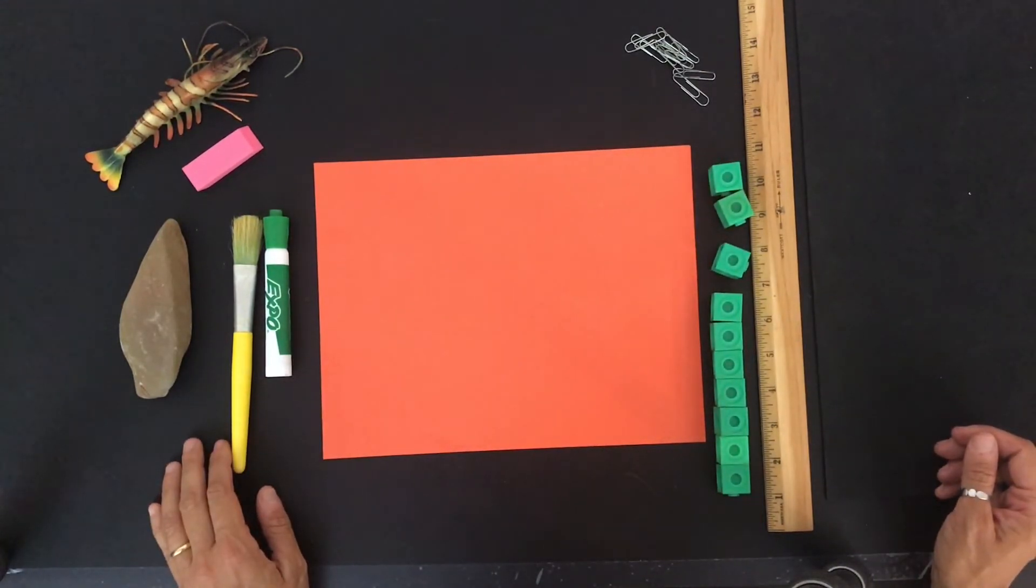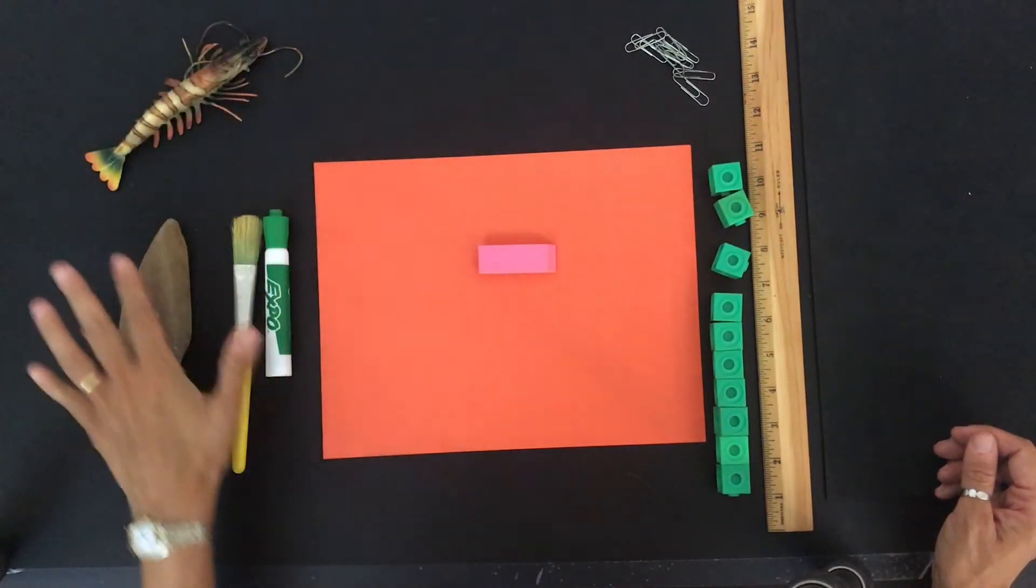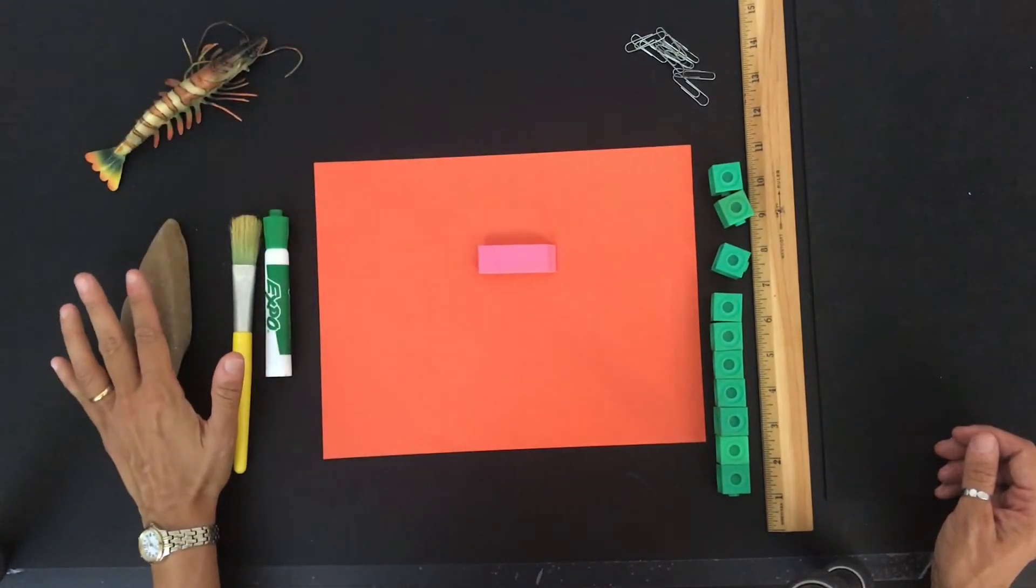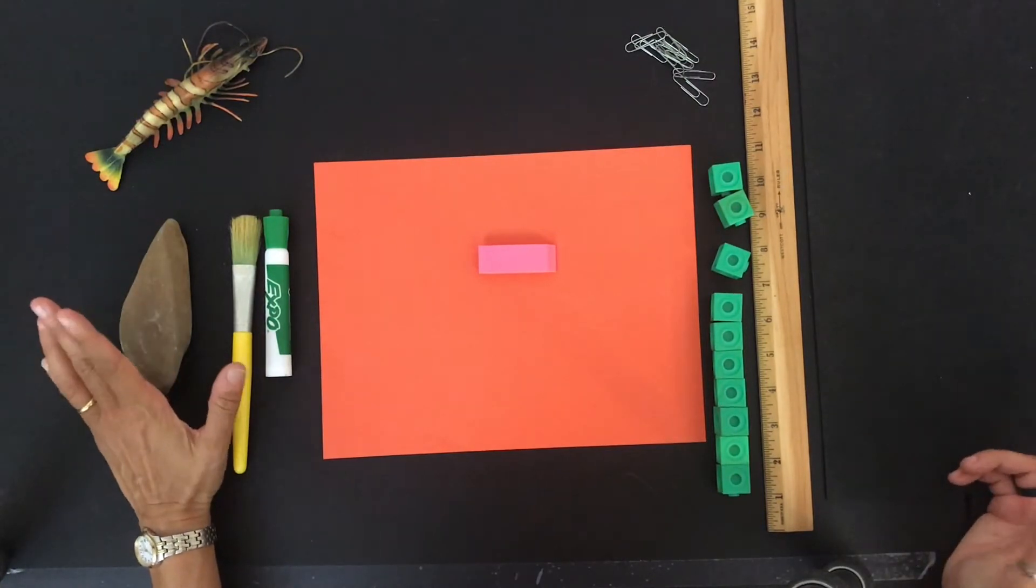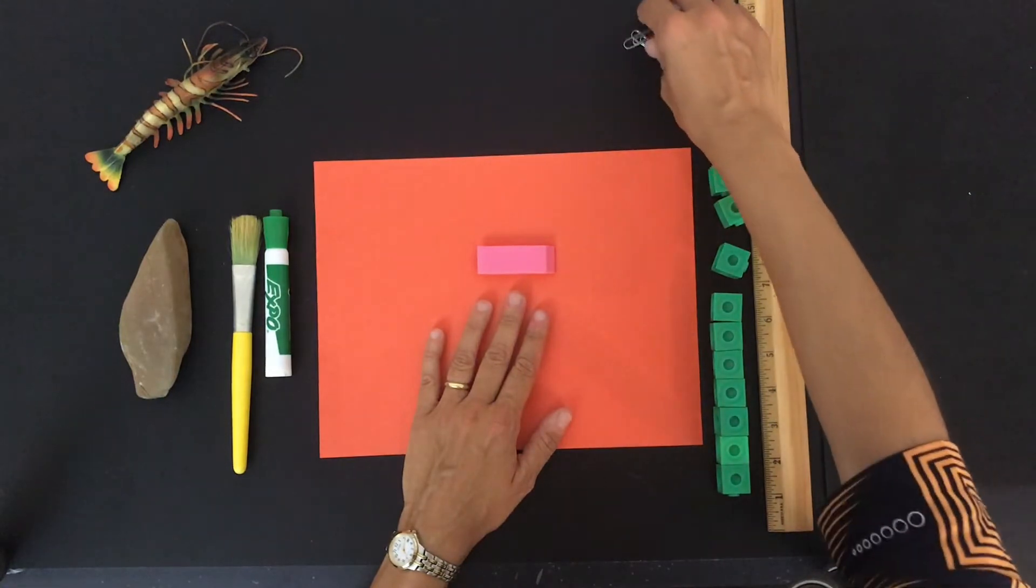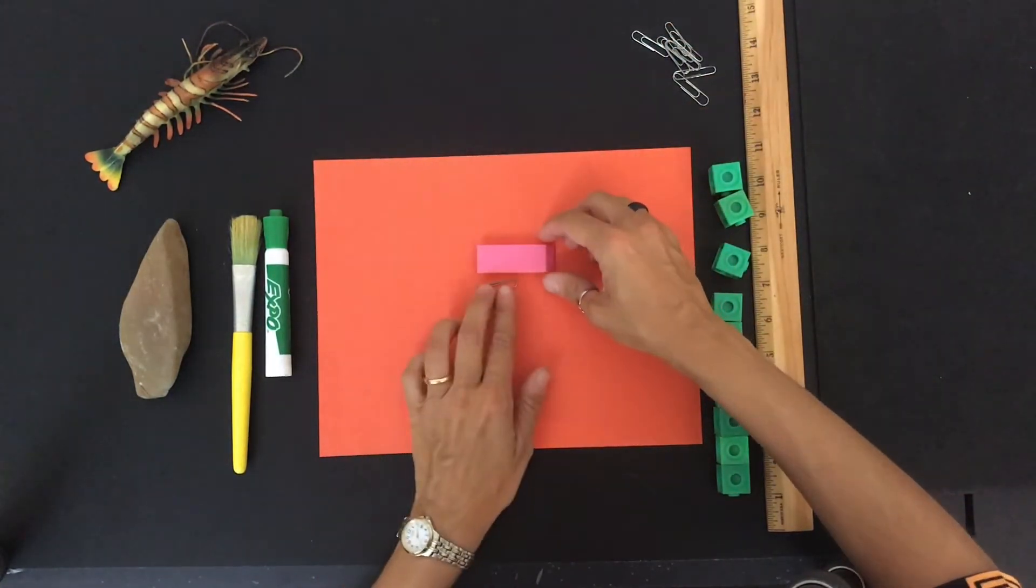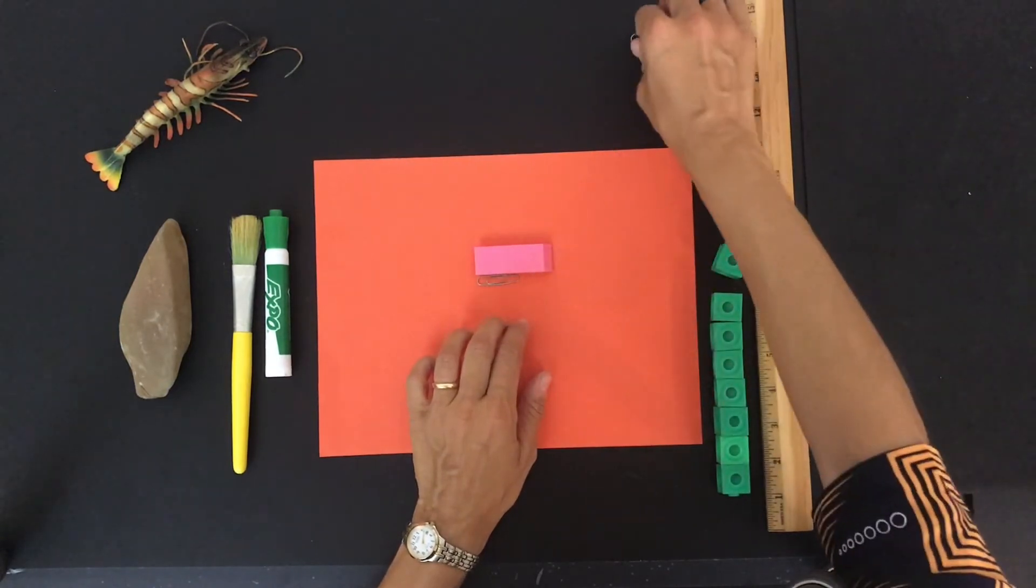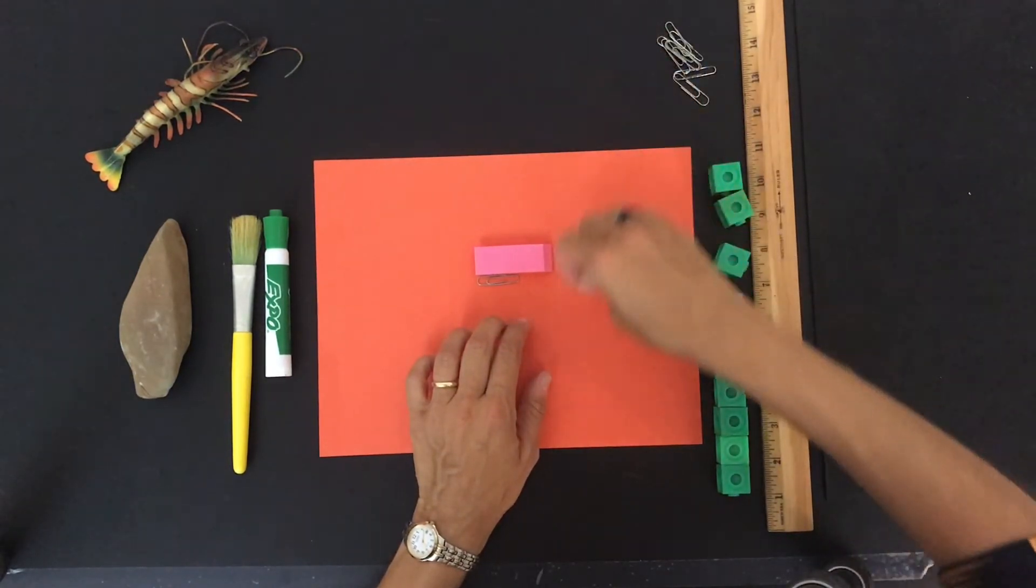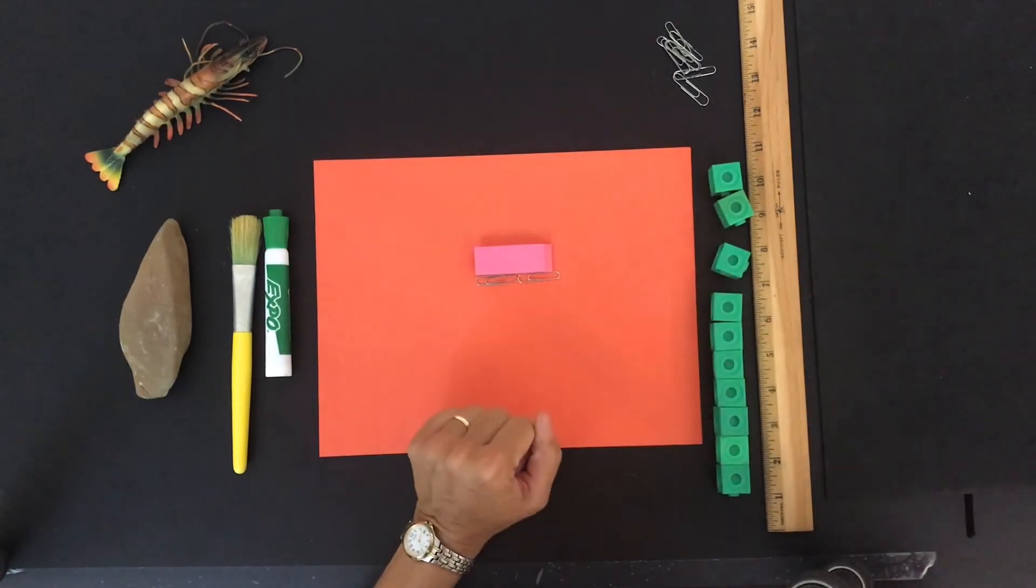So let's start with the eraser. You can bring any objects that you have around the house or your toys or a book, anything you want to measure. I'm going to start with my daughter's eraser. And I'm going to use my paper clips to measure. So let's see how many paper clips long the eraser is. So two paper clips long.